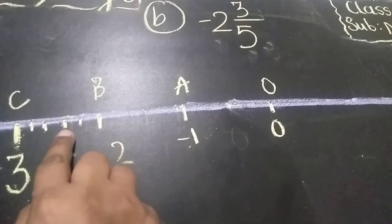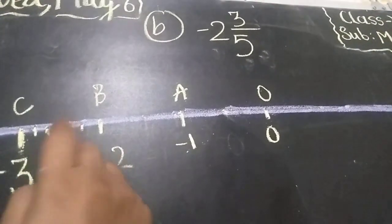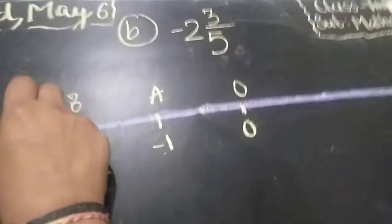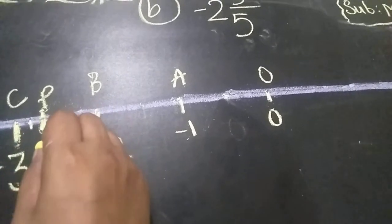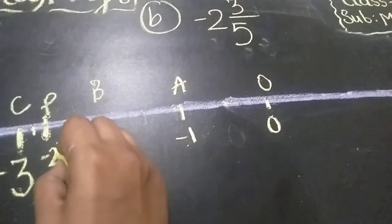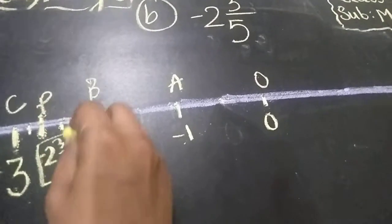So 1, 2, 3. That means this represents, you have to give the name P. What is this? P. So it represents minus 2, 3 by 5.